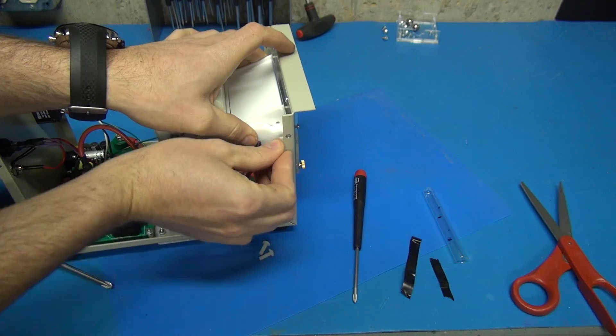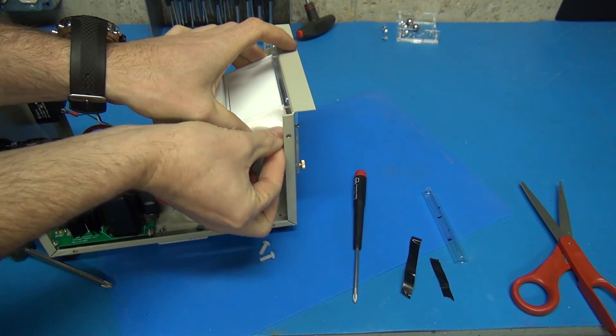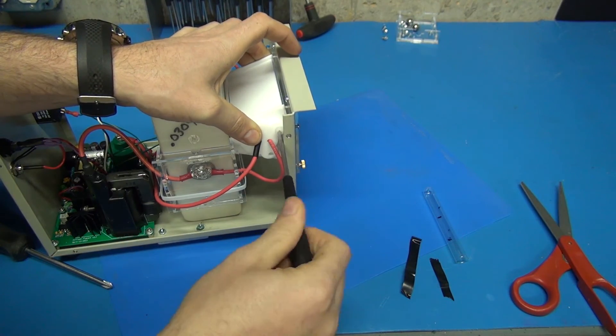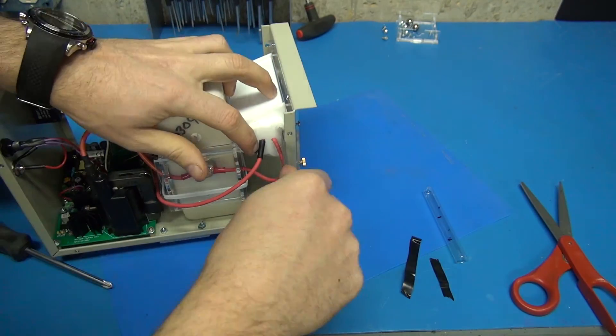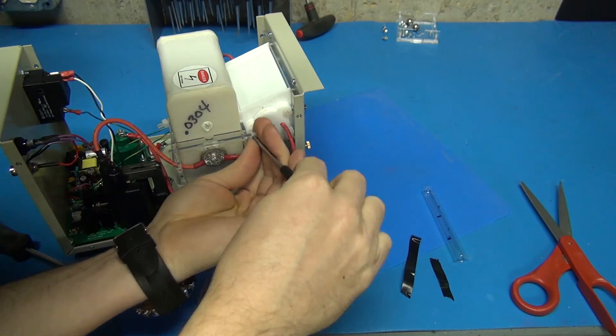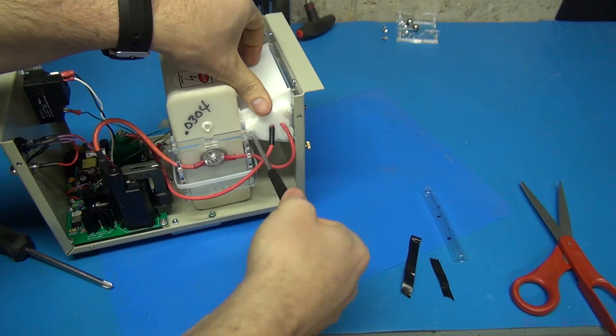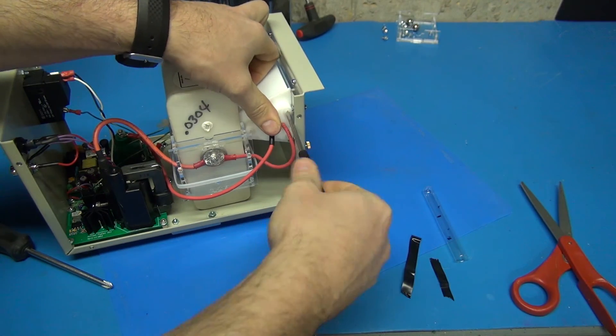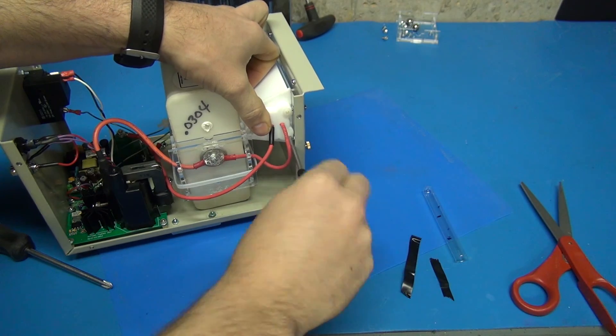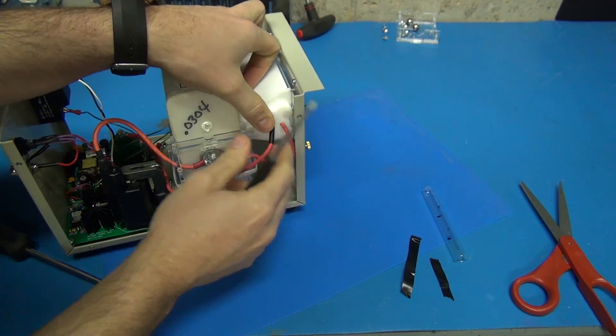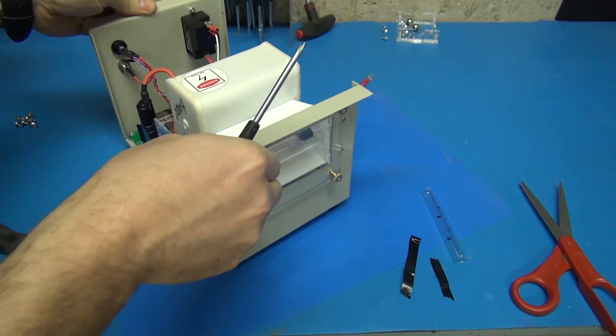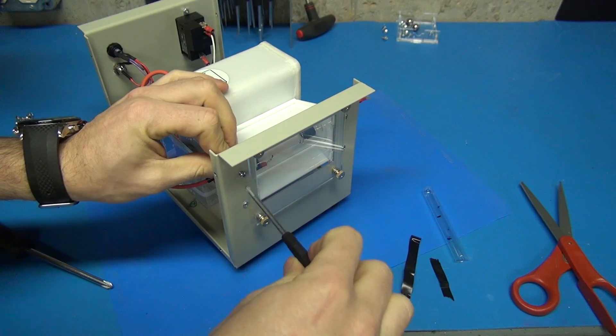And then you put nylon screws back in. You just want these just snug. They are nylon, so you don't want to strip them. And remember, I did loosen this metal bolt so I could gain access. So I'm going to tighten him back.